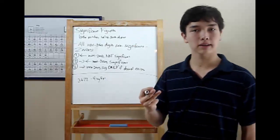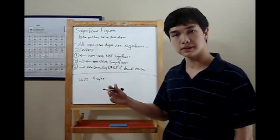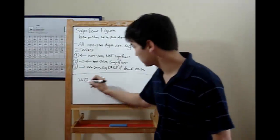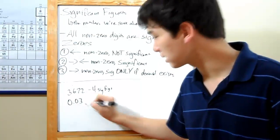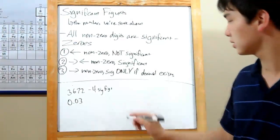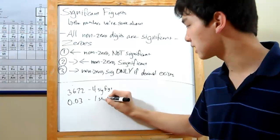When it comes to zeros, there are three rules you need to memorize. First off, any zero to the left of a non-zero digit is not significant. So, say 0.03. Neither of these zeros is significant because it's to the left of the non-zero digit, the three. It's only one sig fig.